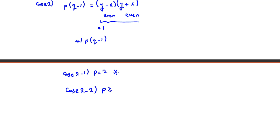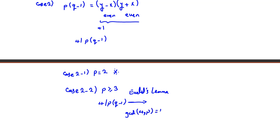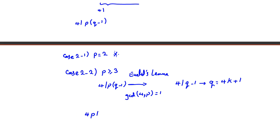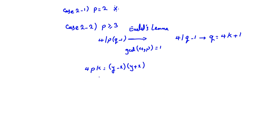Sub-case 2.2: P is at least 3 (odd). Since 4 divides P(Q minus 1) and GCD(4, P) equals 1, by Euclid's lemma 4 divides Q minus 1. So Q minus 1 equals 4K, meaning Q equals 4K plus 1. Then P times (Q minus 1) equals 4PK equals (Y minus X)(Y plus X).